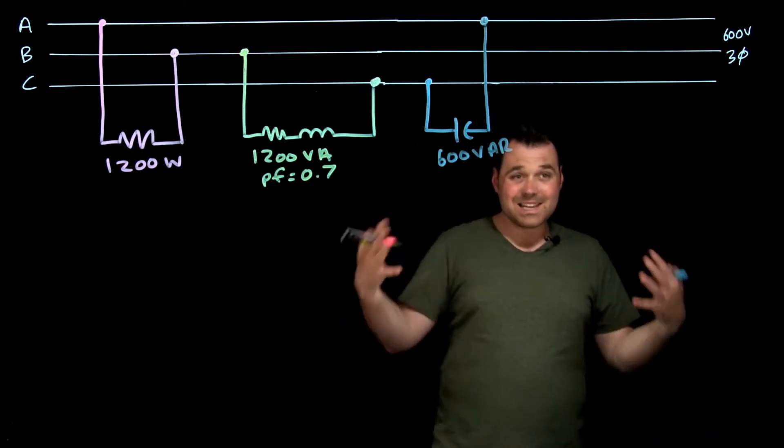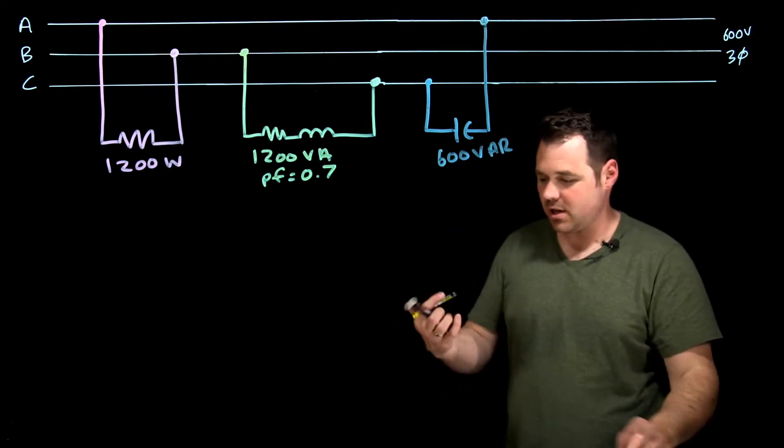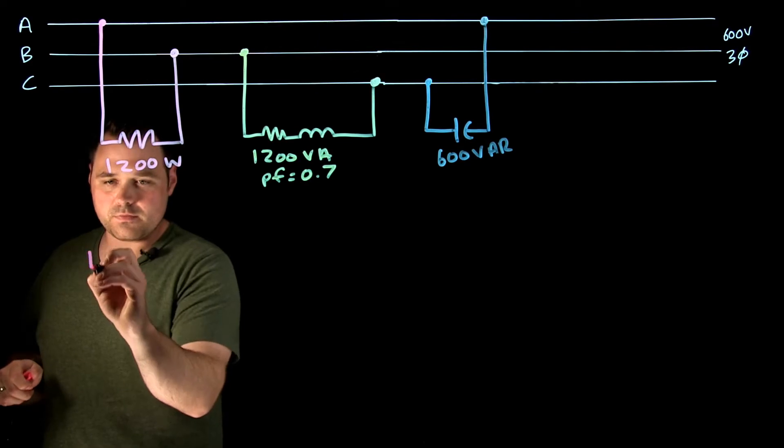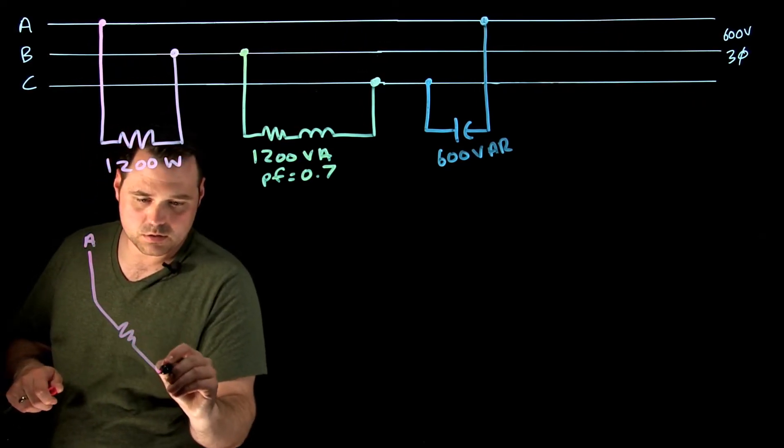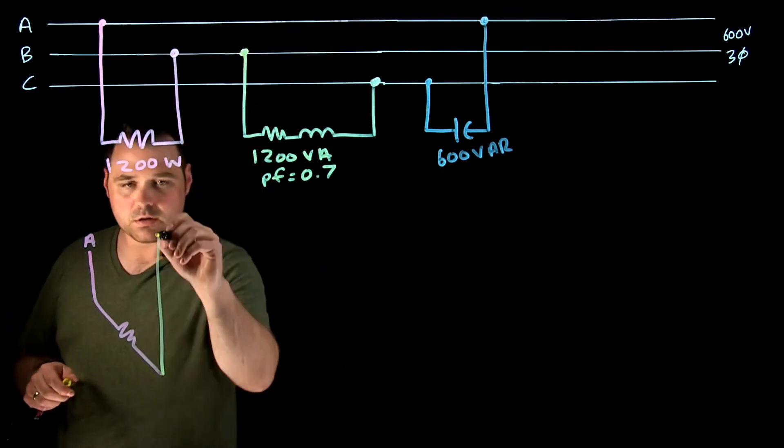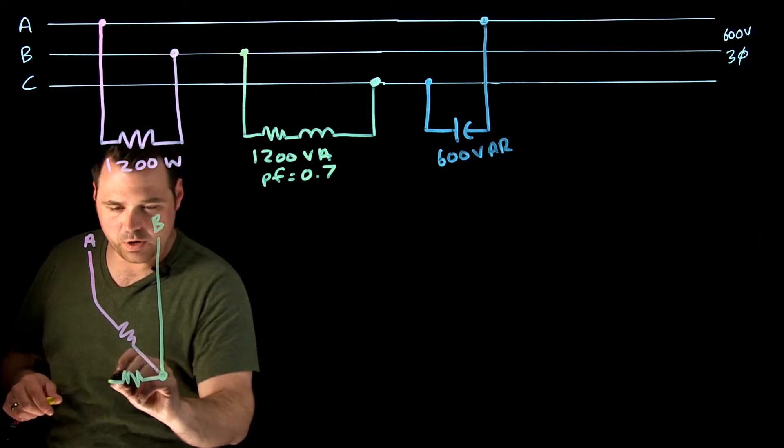So essentially what we've connected here is a circuit that looks like this: from A to B, I've got my resistor, from B node to C is where I've got that coil.